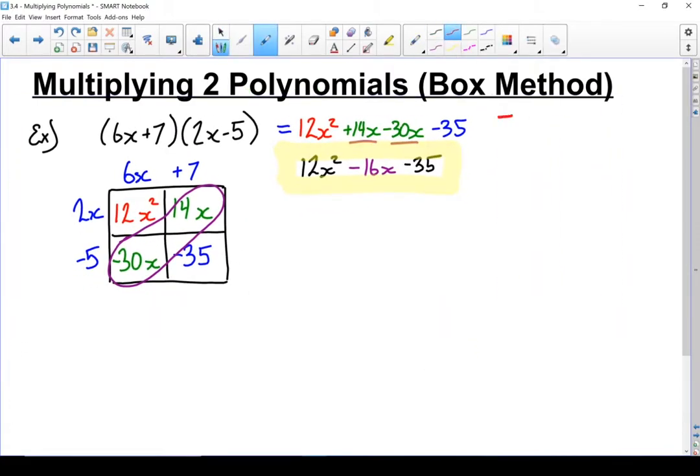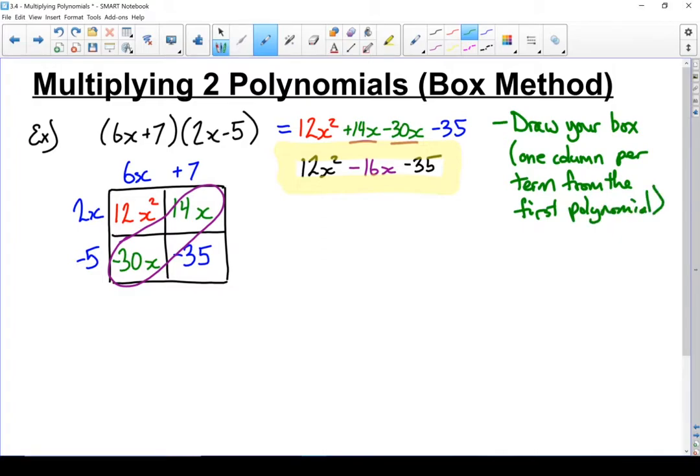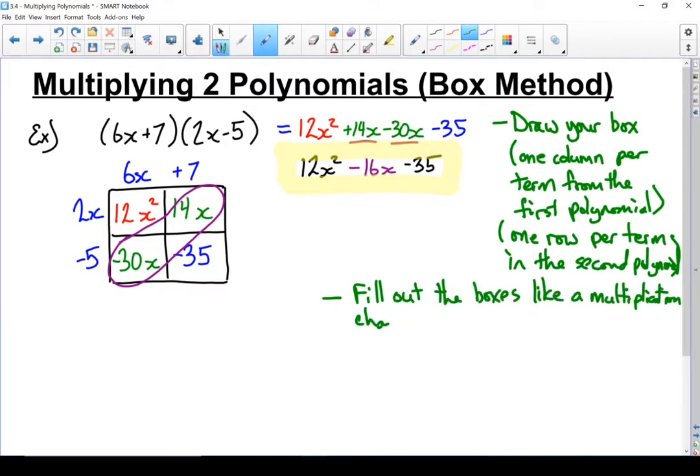Let's write out our steps. Start by drawing your box. And it has one column for each term in your first polynomial. And one row for each term from your second polynomial. Next, we fill it out like a multiplication chart. Last but not least, we collect the like terms and write out our final answer.